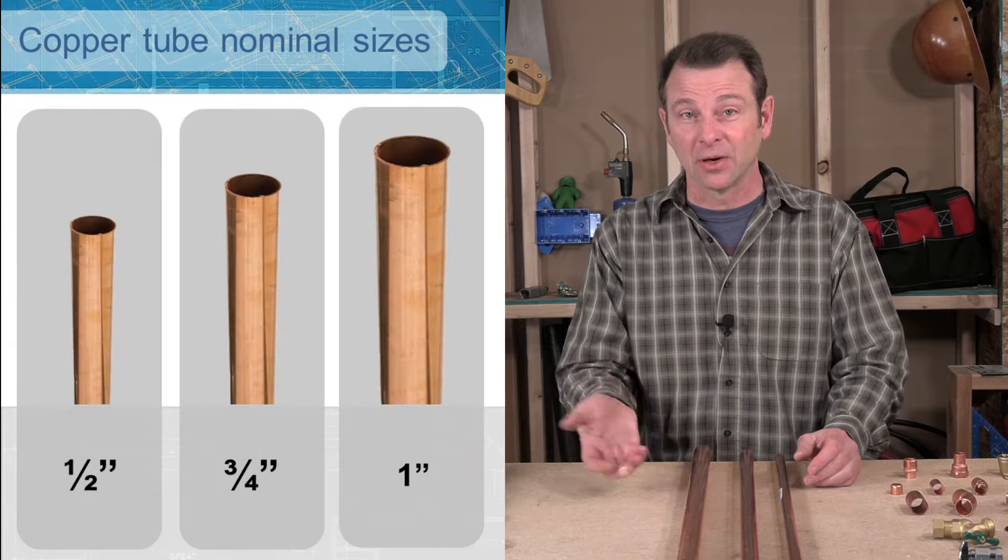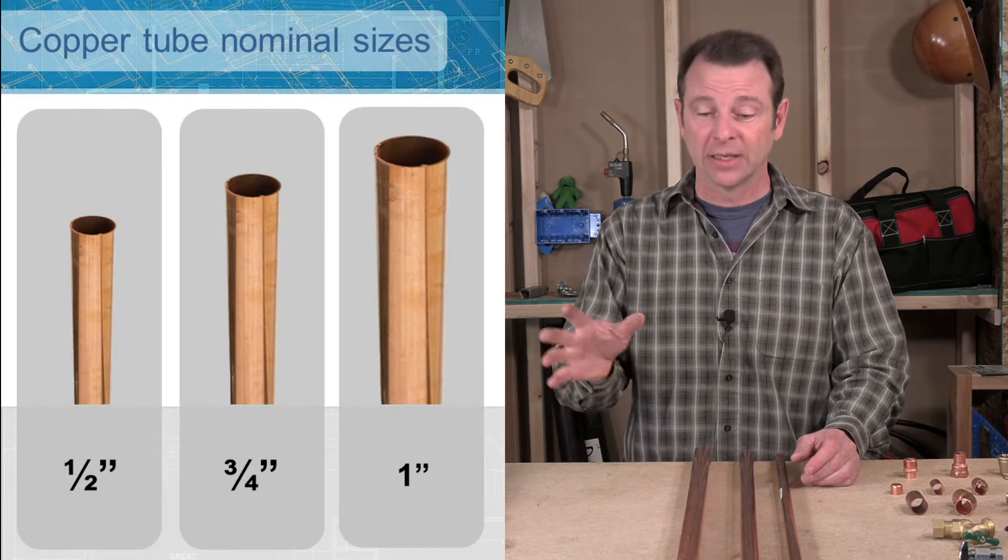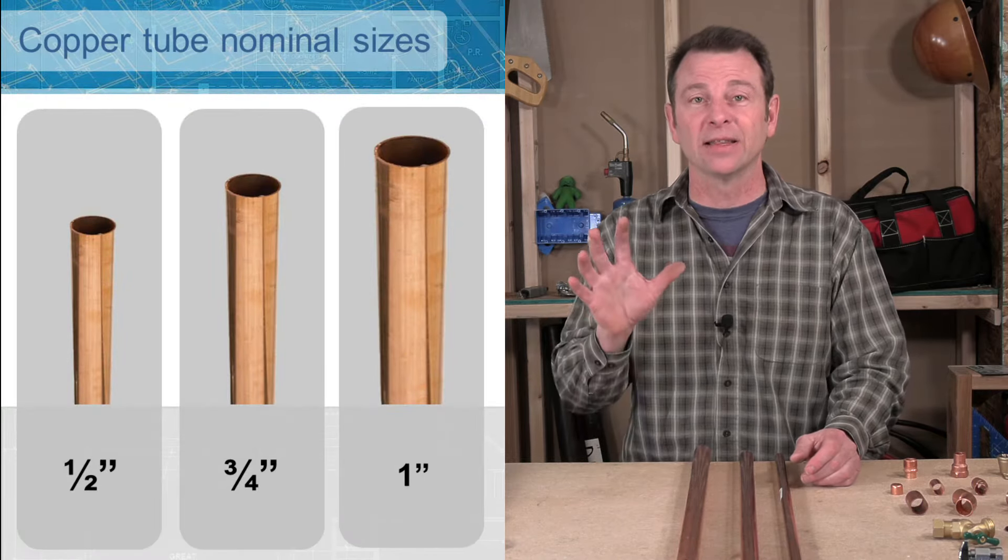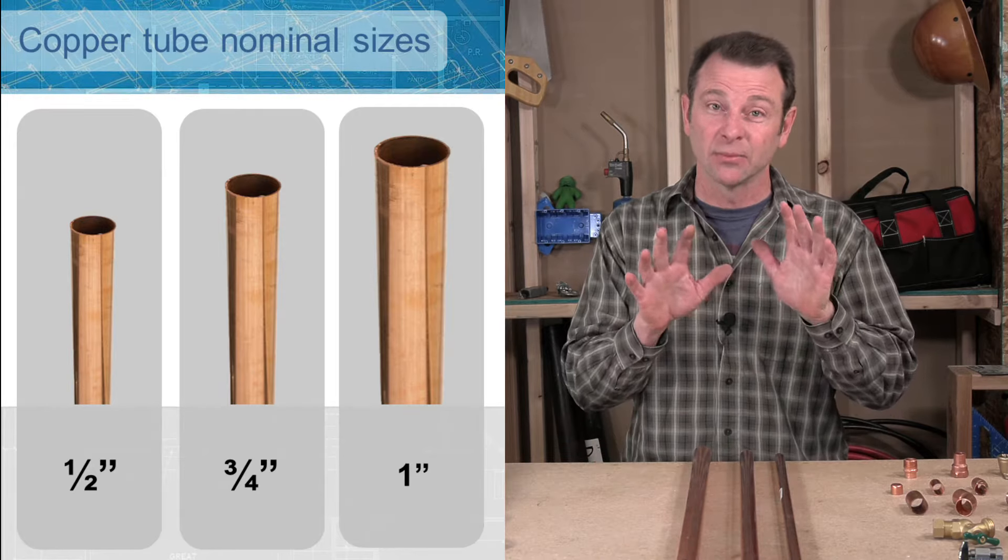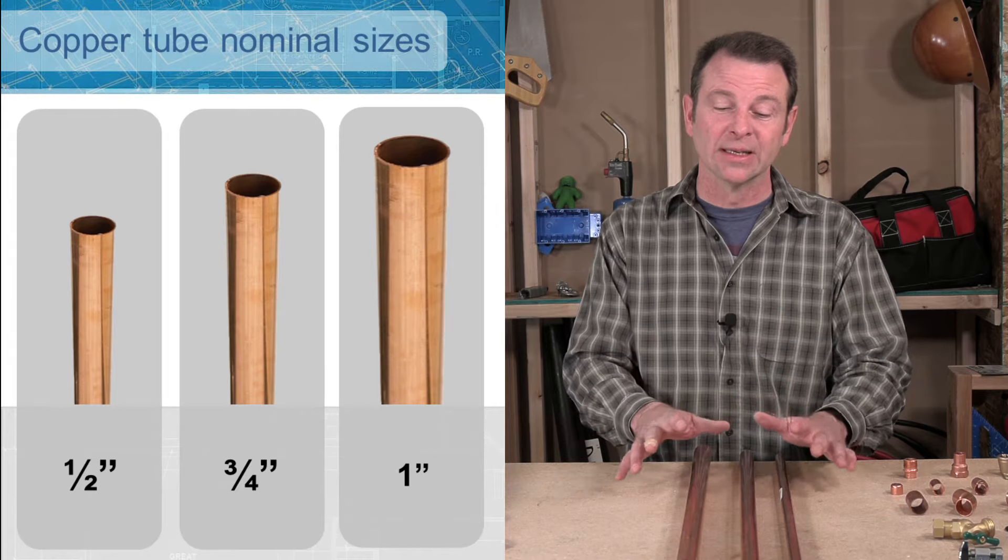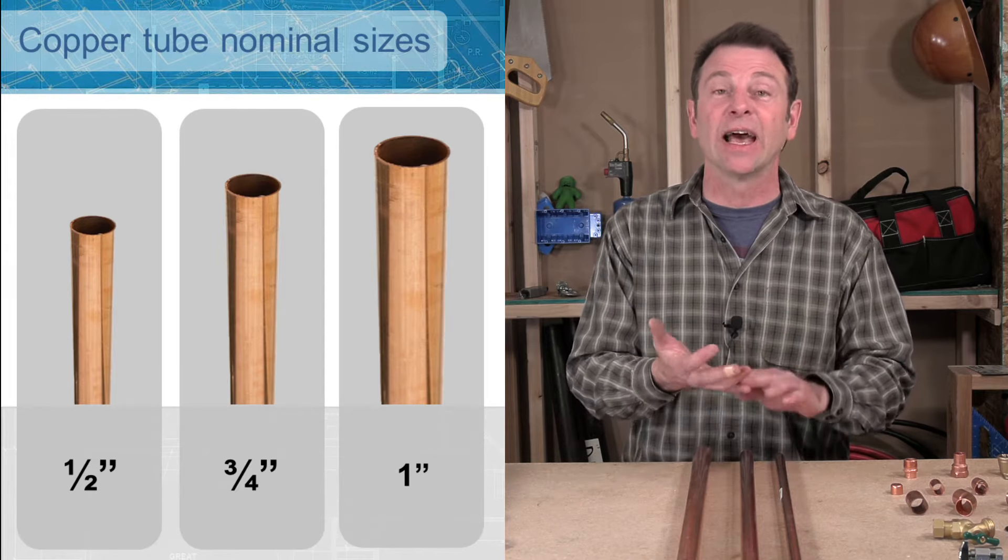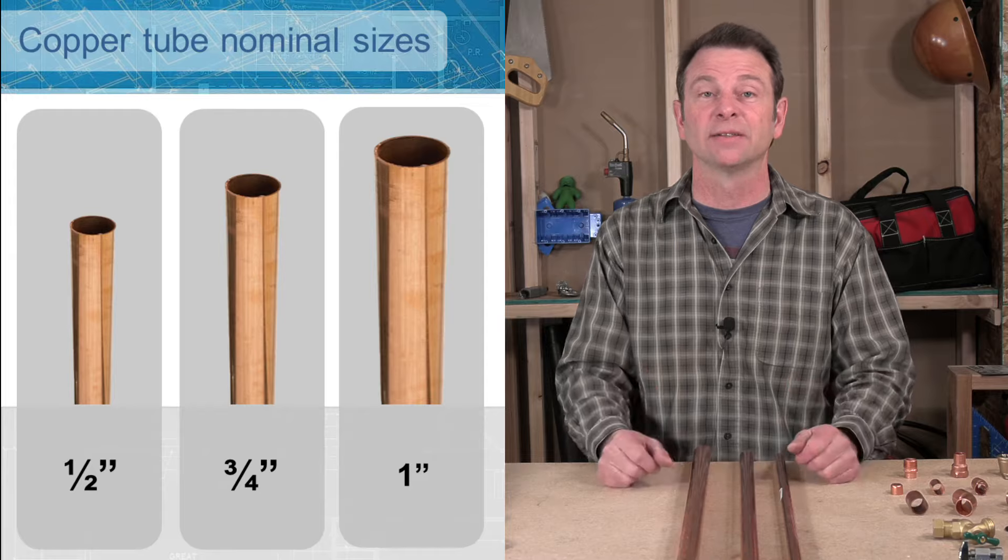You can end up with larger inch and a half, two inch, and they can go bigger depending on the demand of the system, right? It all has to be designed. But in a residence or a typical building, these are the three sizes you'll see. Half inch, three quarter, and one inch.